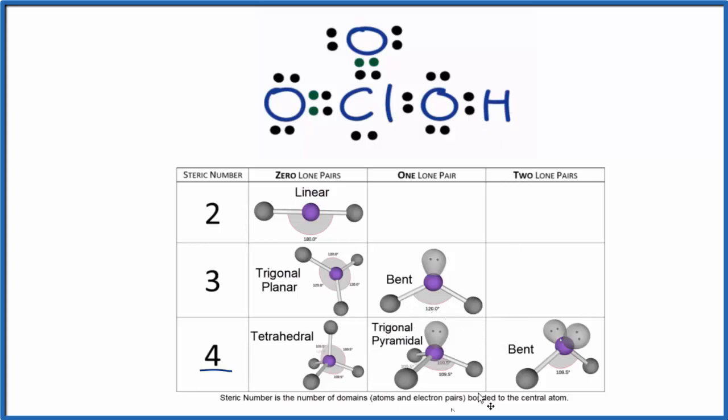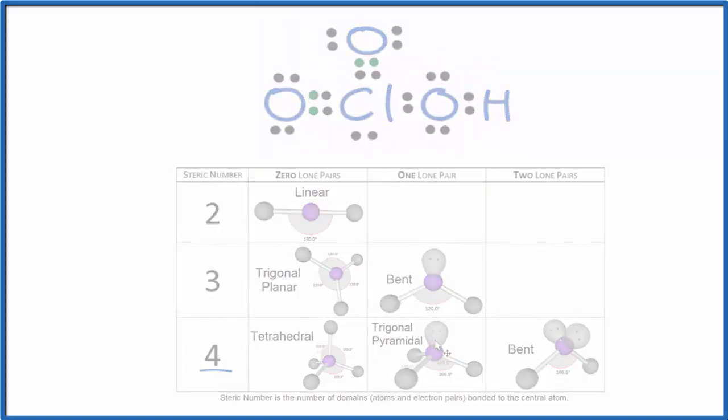This is Dr. B with the trigonal pyramidal molecular geometry for HClO3, chloric acid. Thanks for watching.